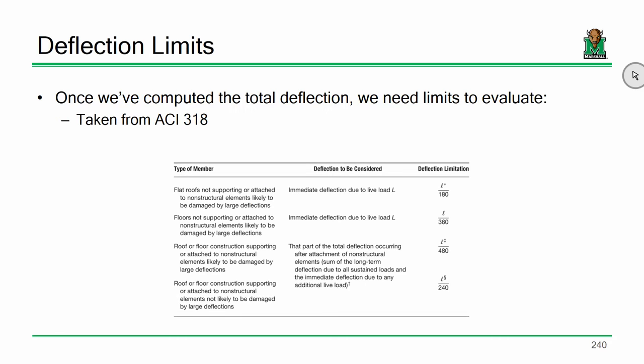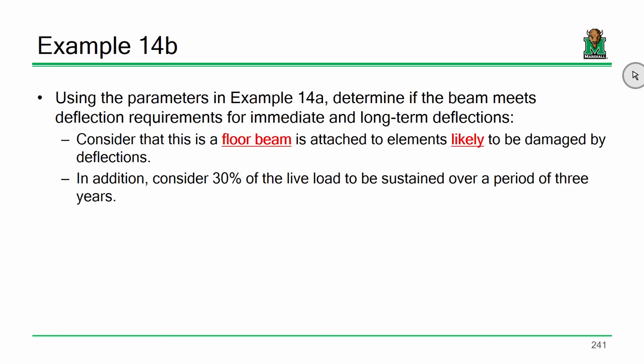Our limits are discretized based on whether we're dealing with roof or floor members and whether we're looking at immediate or total deflections. We're looking at the beam from example 14A. We calculated immediate live load deflection and want to know if it meets requirements for immediate and long-term deflections. It's a floor beam likely to be damaged by deflections. We'll consider that 30% of the live load is sustained over a period of three years.